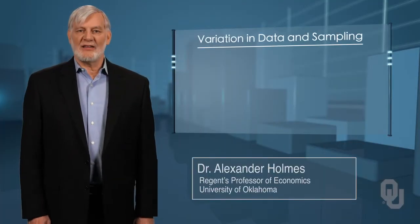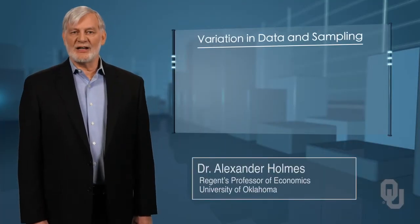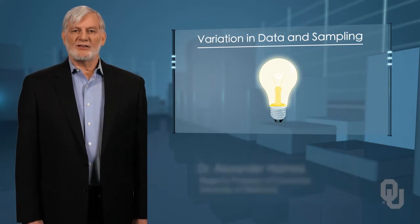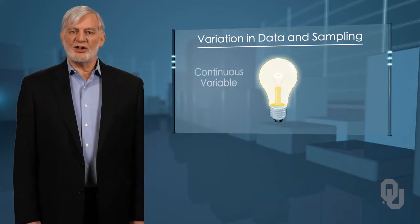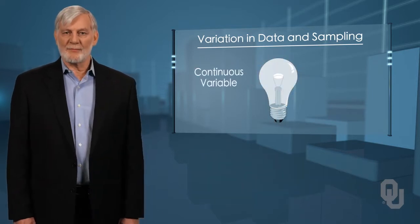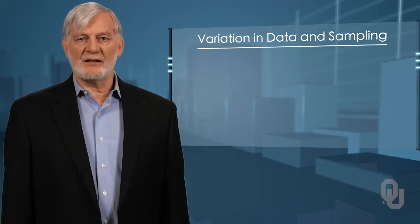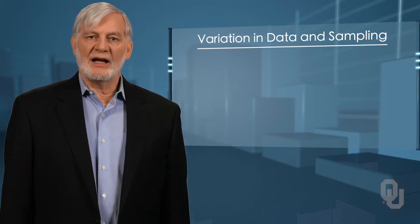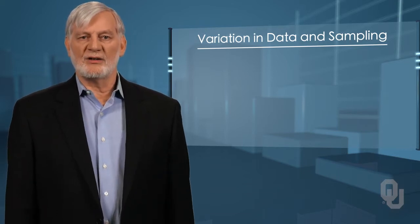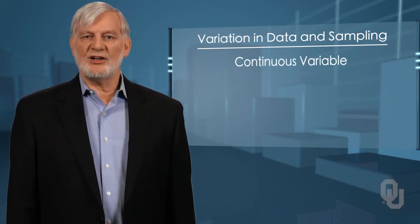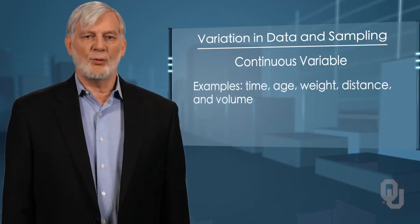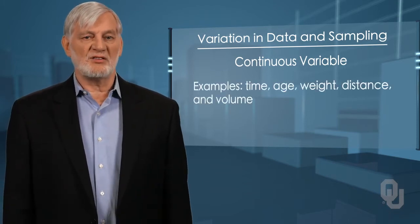Data comes in different types and thus are given different names. The length of the life of a light bulb is an example of a continuous variable — time. Any variable that can be divided and divided again and again, and has therefore theoretically an infinite number of possible values, is a continuous variable. Examples are of course time, age, weight, distance, and volume.